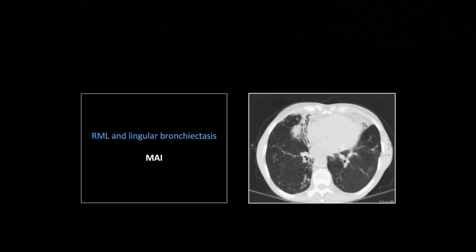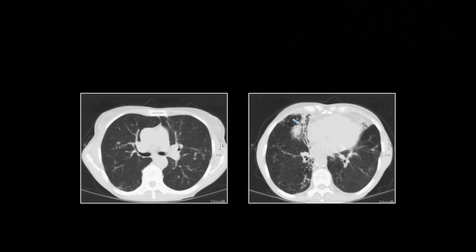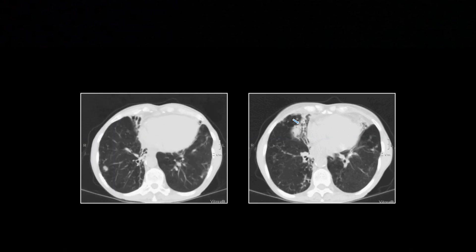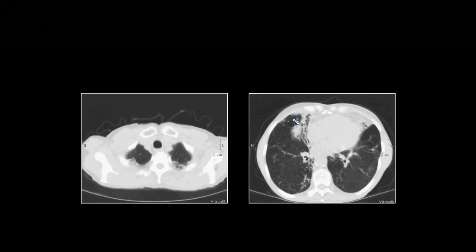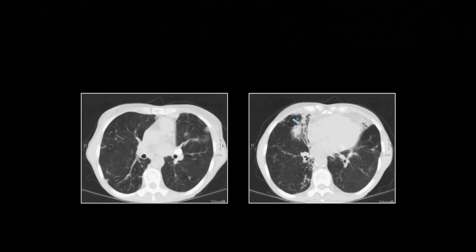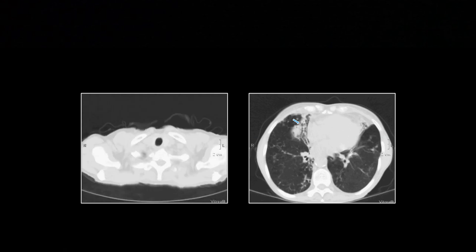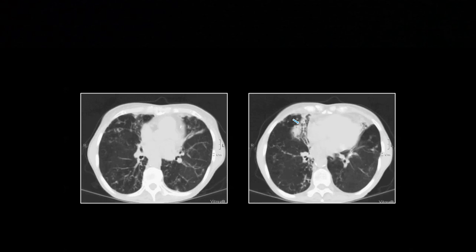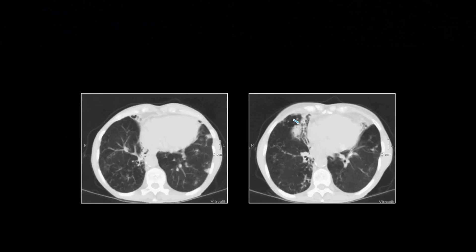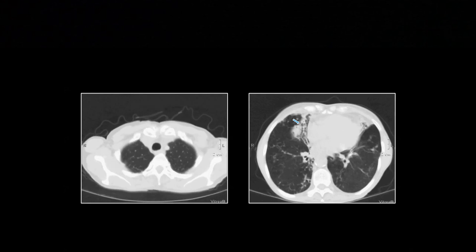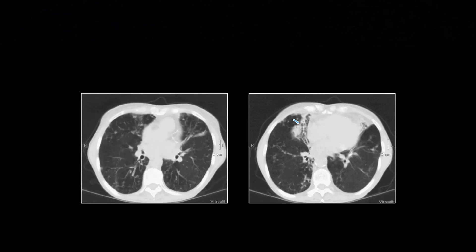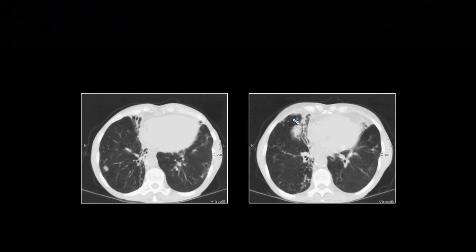Another tuberculosis pattern: this is the classic Lady Windermere finding — right middle lobe and lingular bronchiectasis. Bronchiectasis in this distribution, especially in an elderly female, should immediately call to mind MAI: Mycobacterium avium intracellulare. It's often a chronic colonization, and these patients are not horrifically sick. It's usually elderly females, oftentimes institutionalized.